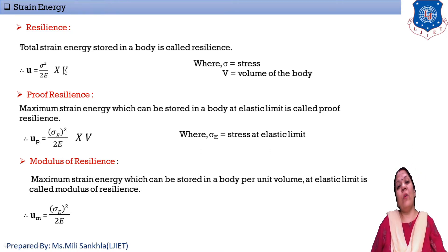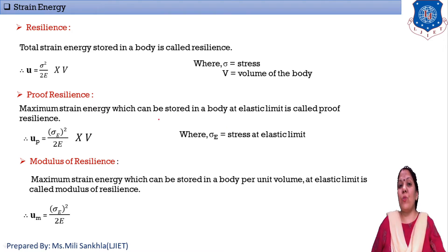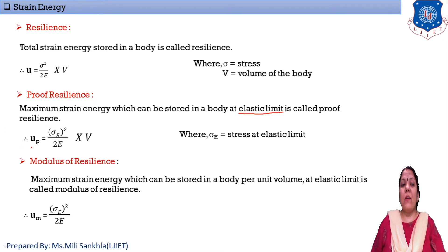The second definition is proof resilience: the maximum strain energy stored in a body at the elastic limit. The key word here is 'elastic limit.' Its notation is U_p = (σ_e² / 2E) × V, where σ_e is the stress at the elastic limit and V is volume.